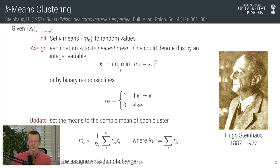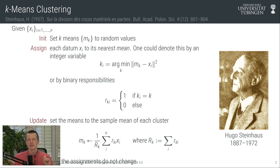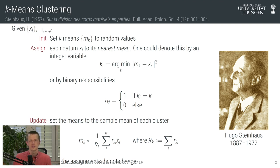The algorithm we began with is a clustering algorithm called k-means, arguably invented by Hugo Steinhaus in the early 20th century. It is an iterative process that creates a clustering on a data set consisting of samples x_i by iterating between two steps: computing distances to every data point and assigning each mean a responsibility for the closest data point, then updating the means by computing averages over their assigned data points.